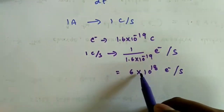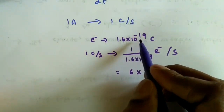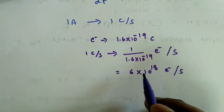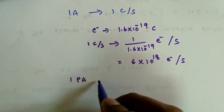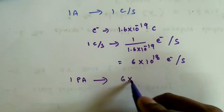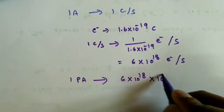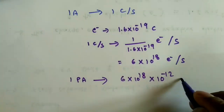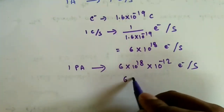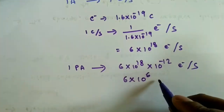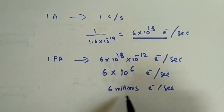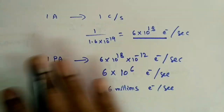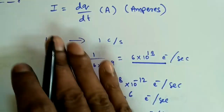We can verify: 6 × 10¹⁸ multiplied by 1.6 × 10⁻¹⁹ gives approximately 0.96 coulombs, which is approximately 1 coulomb per second. For 1 picoampere current, the net motion is 6 × 10¹⁸ × 10⁻¹² = 6 × 10⁶ electrons per second — that is, 6 million electrons per second. This covers the definition and equations of current.